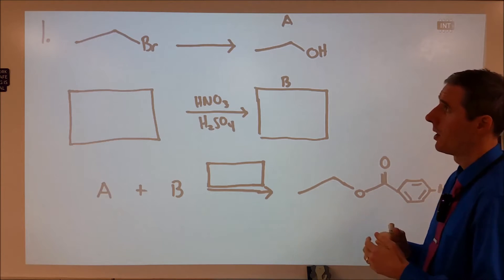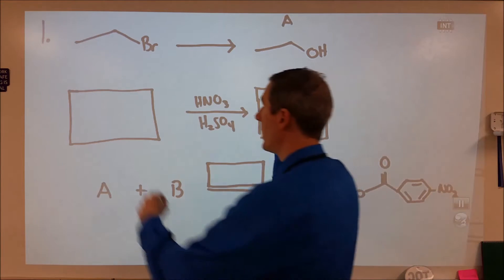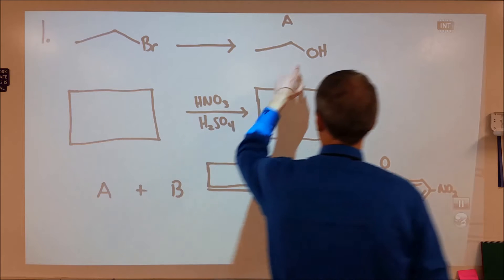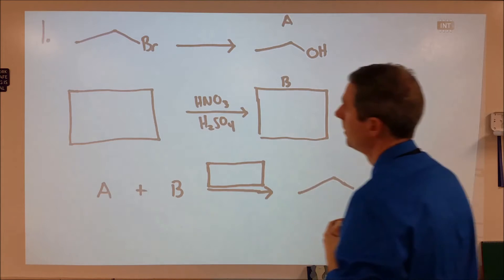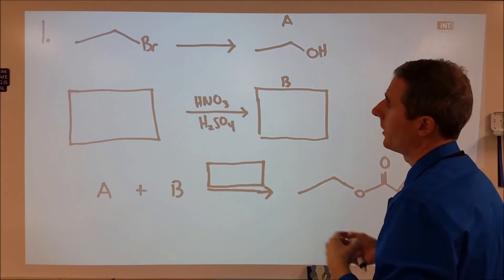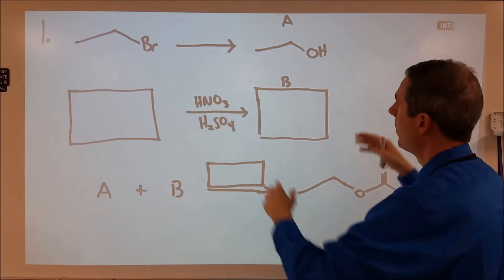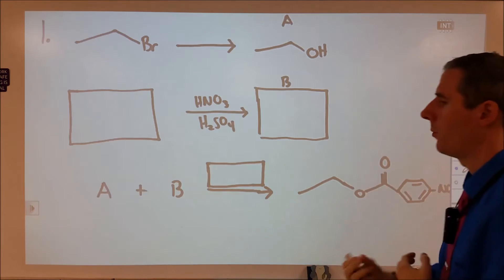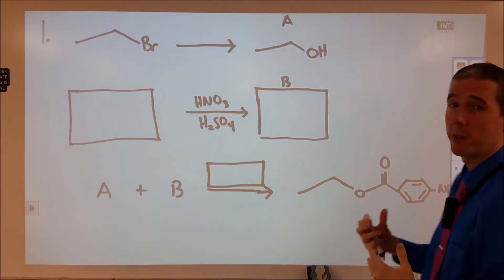Here we're going to go through a couple organic synthesis problems. The first one here, we are starting with bromoethane and it's converted into ethanol. So we want to think about what we're starting with, what we're ending with, what the difference is, and what reagents we know that we can get from one to the other.